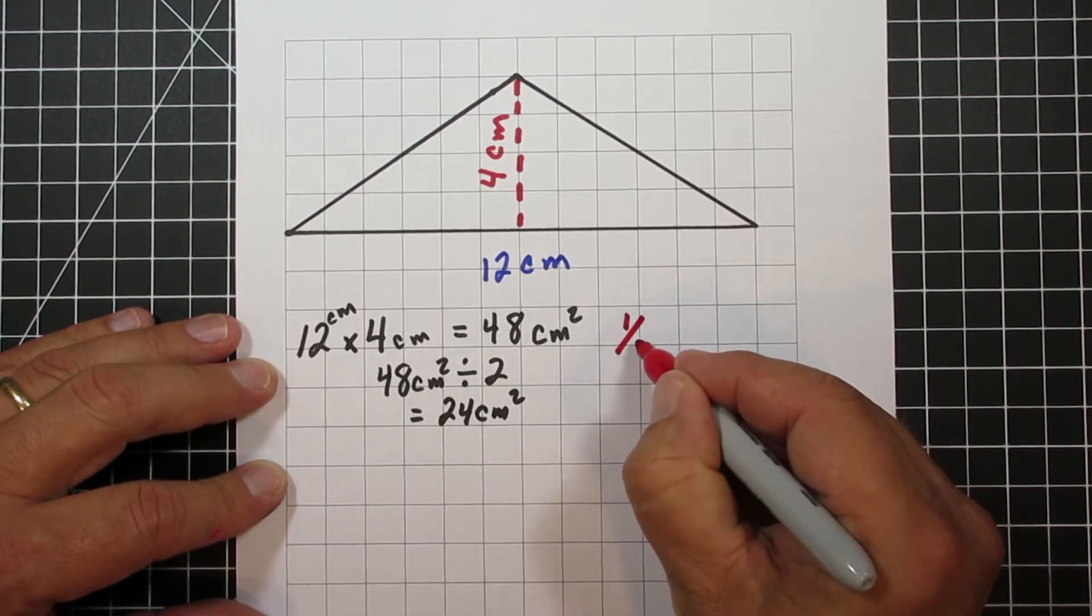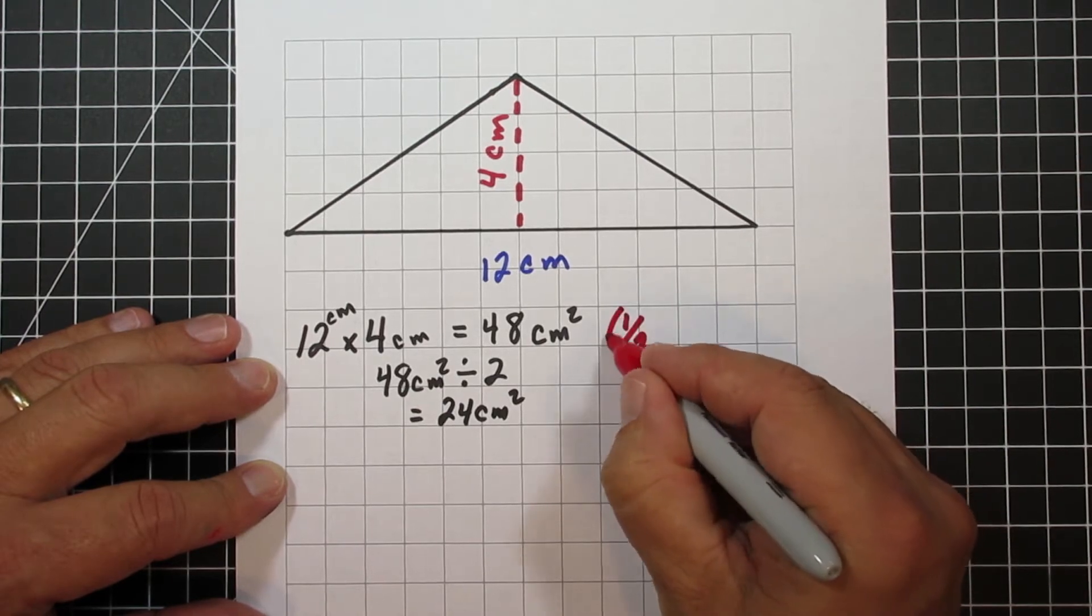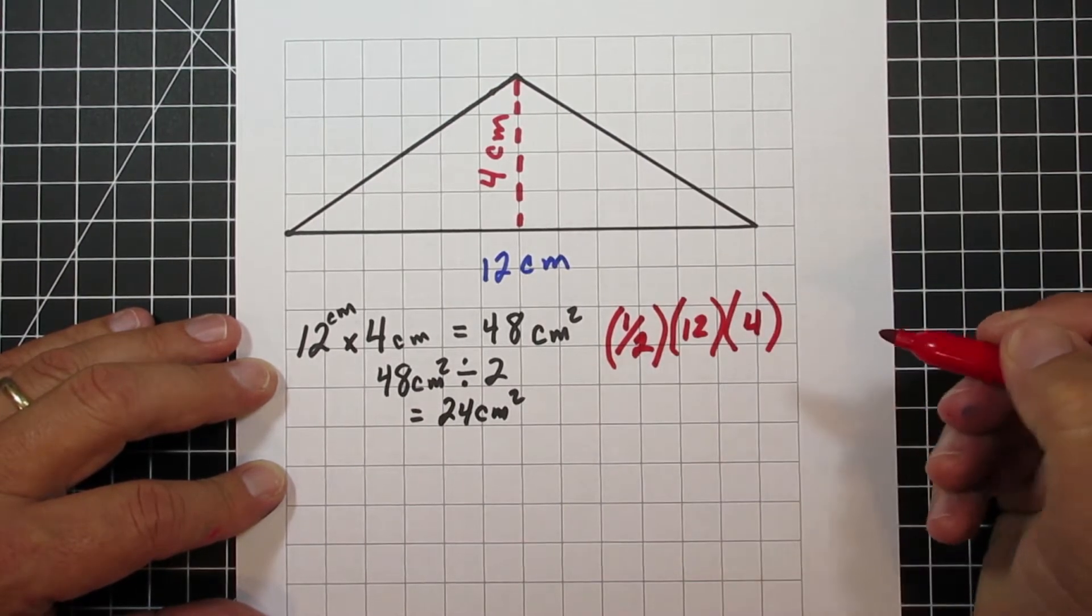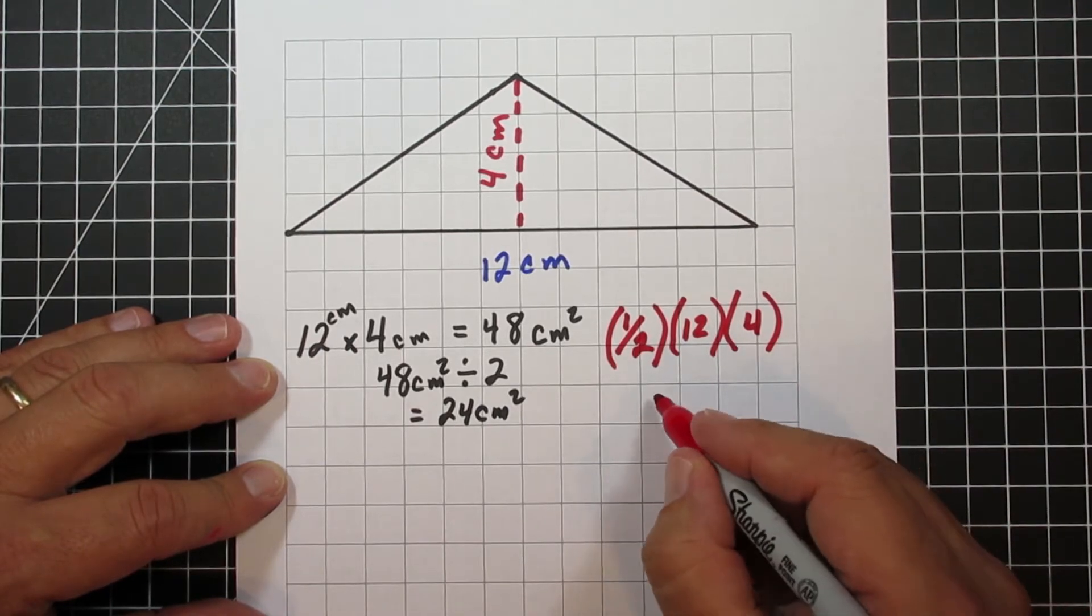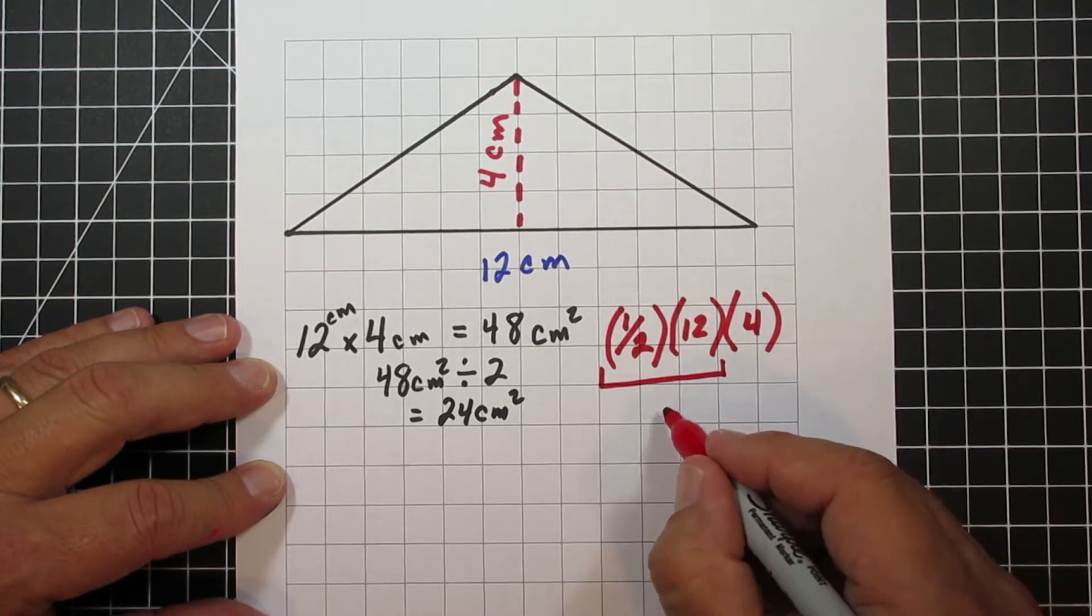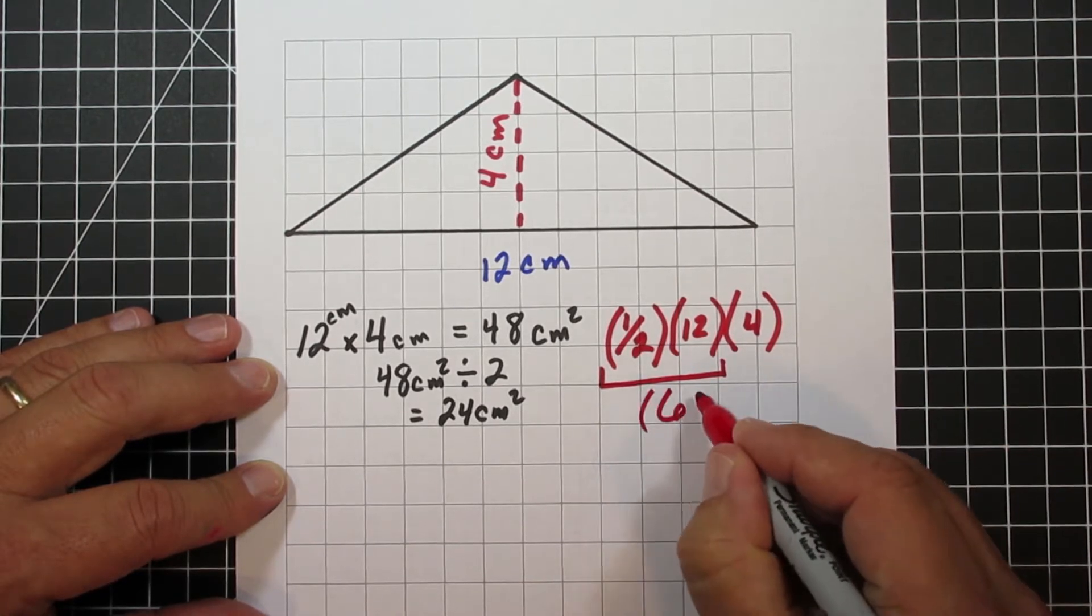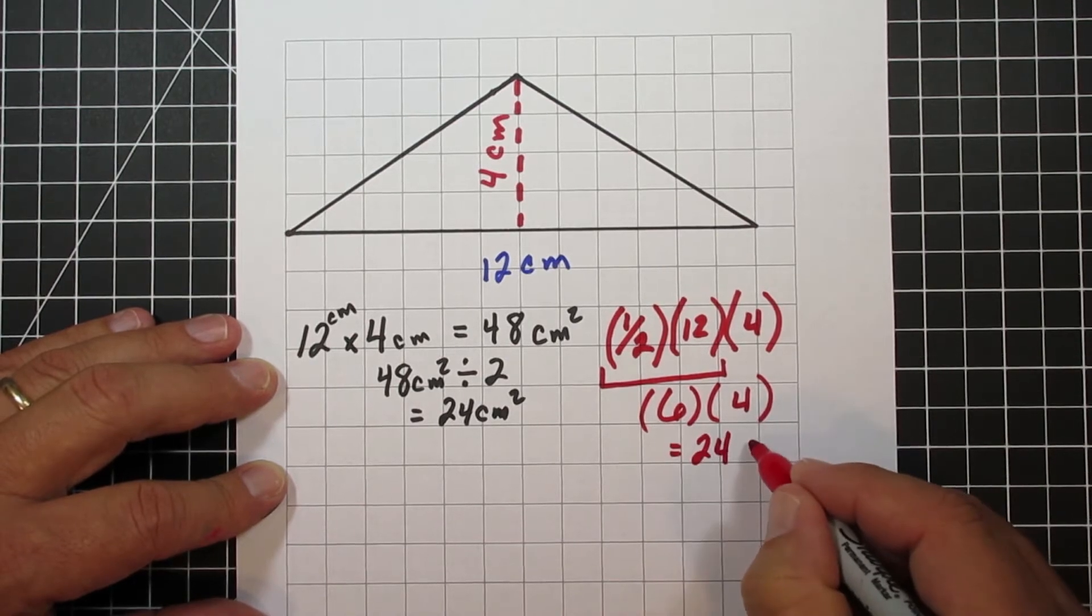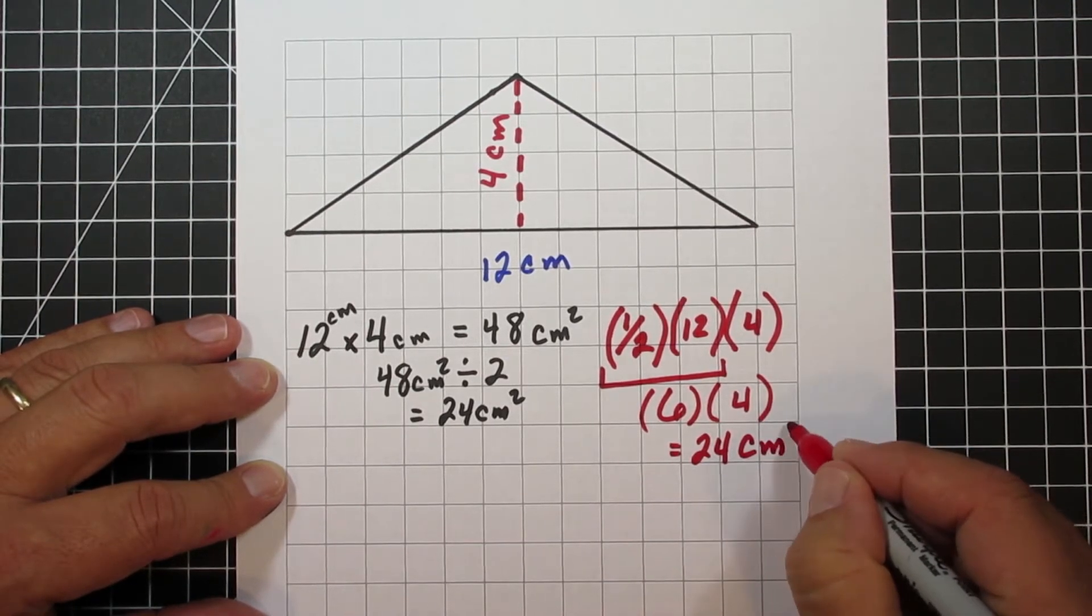Now, when we use our next formula, we're going to multiply the 1 half, we're going to multiply it by the base, in this case it's 12, and then we'll multiply it by 4 of the height. Now, first we can multiply 1 half times 12, that will give us 6, and so we're going to take 6 times 4, and just like the first problem, it gives us 24 centimeters squared.